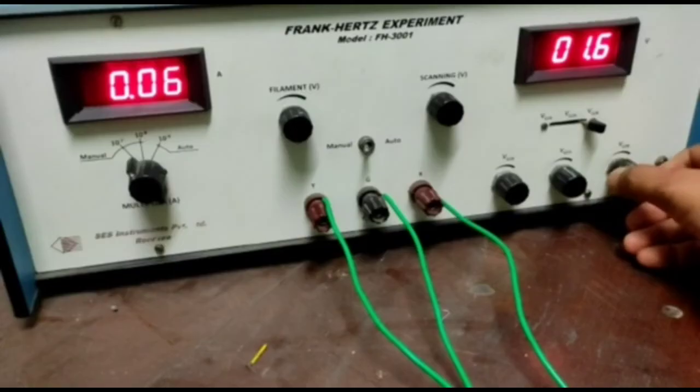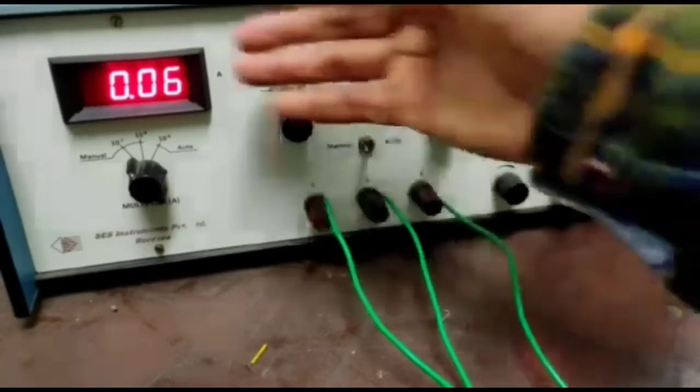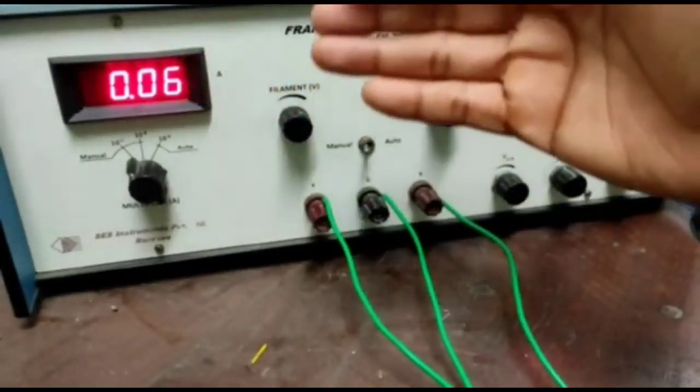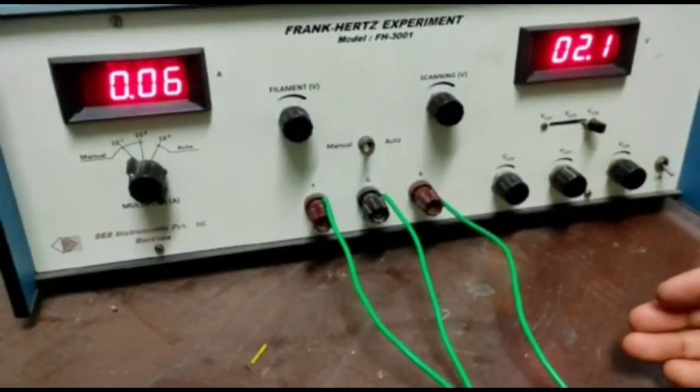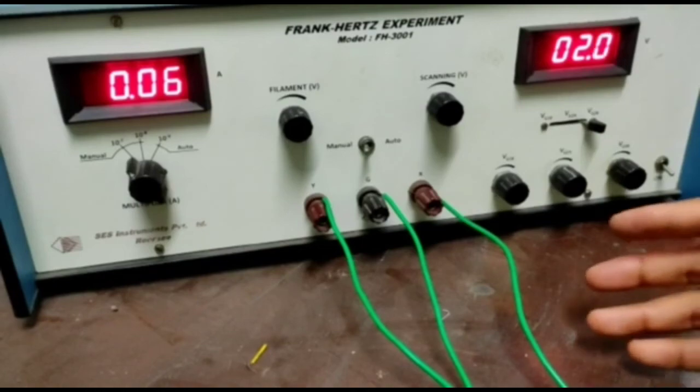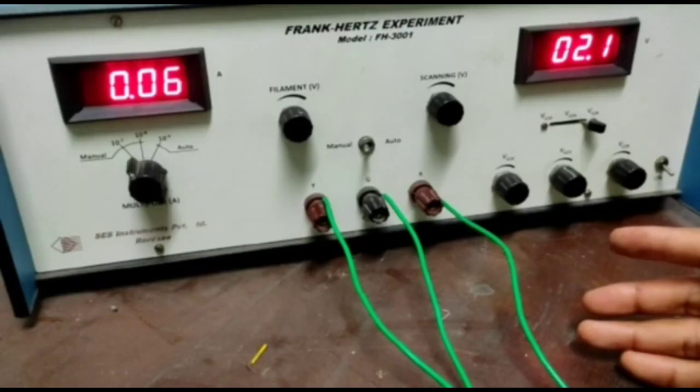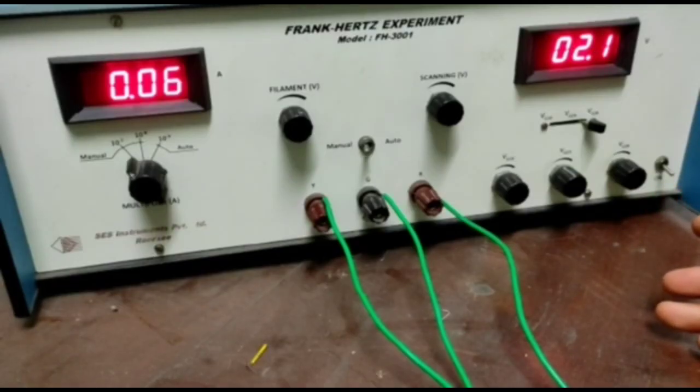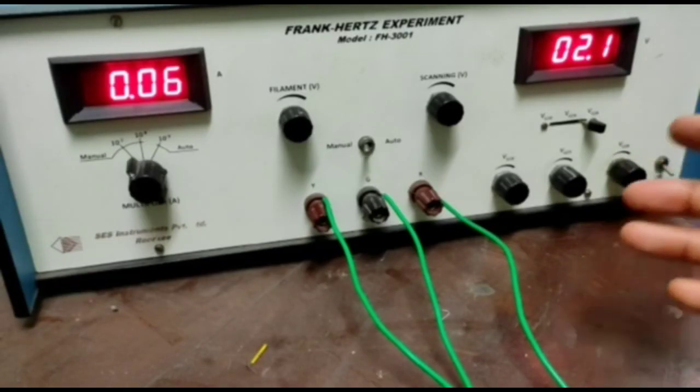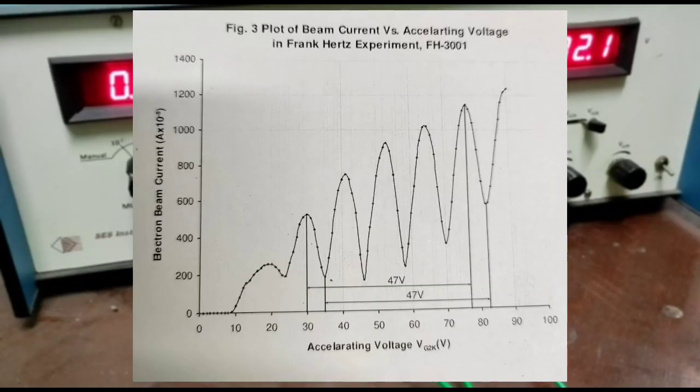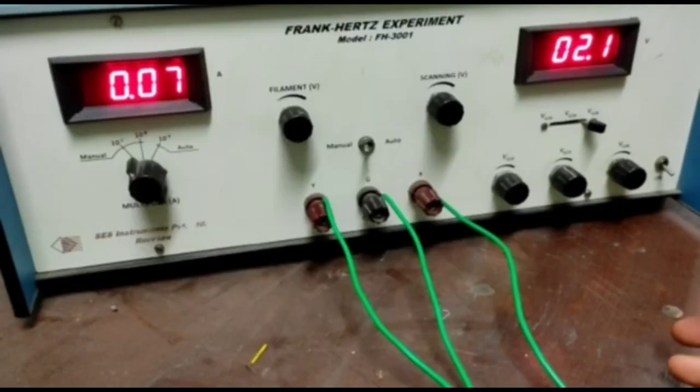Then you have to plot, if you increase this VG2K value, this plate current will increase and maybe decrease after some time, then again it will increase. Plot the graph with the output current y-axis and accelerating voltage VG2K at x-axis. The data obtained for the excitation potential by point to point are shown here, where we can see that the energy is transferred from the beam in bundle that is quanta. I hope this experiment will help you to perform this experiment in laboratory. Thank you.